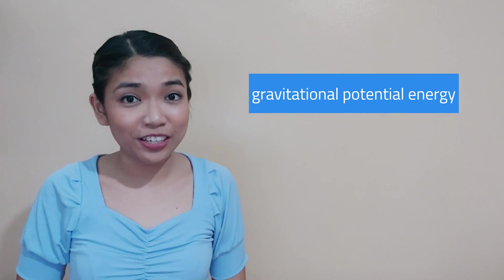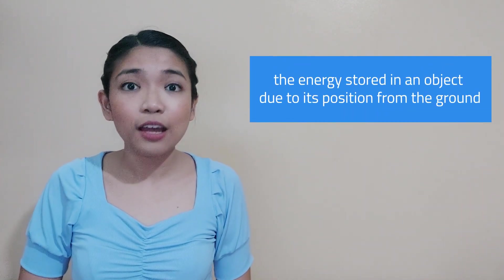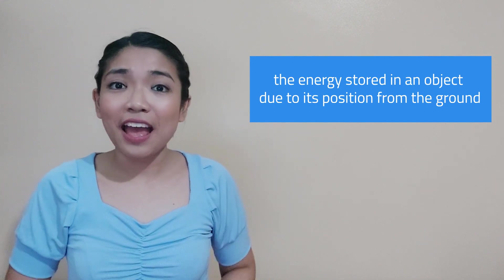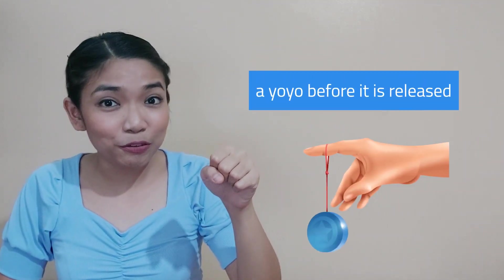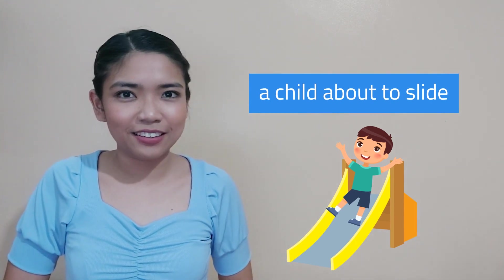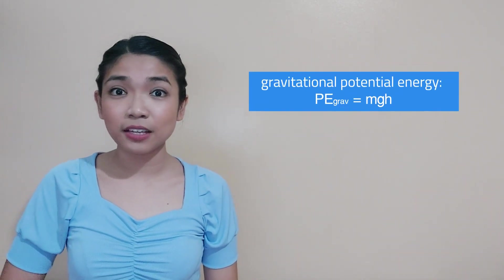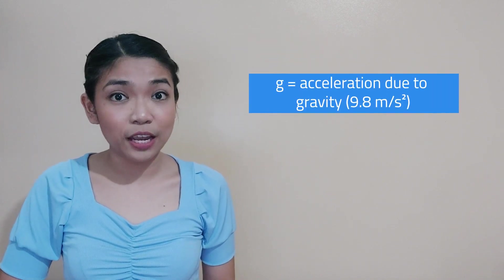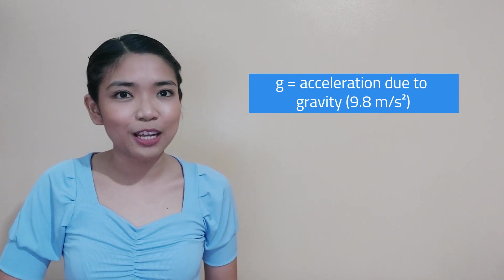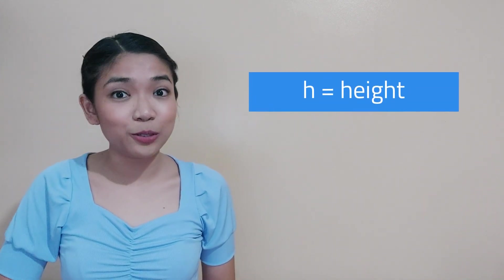Gravitational potential energy is the energy stored in an object due to its position from the ground. Examples are a raised weight from the ground, a yo-yo before it is released, and a child about to slide. Gravitational potential energy is mathematically expressed as PE = mgh, where m is mass, g is acceleration due to gravity which is 9.8 meters per second squared, and h is height.